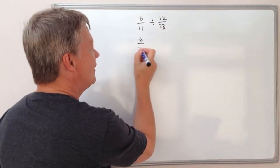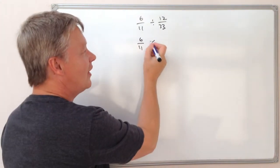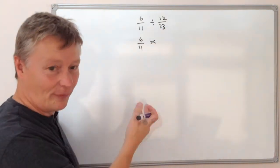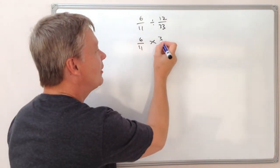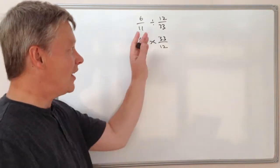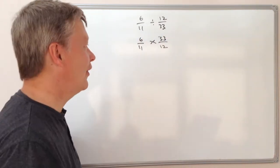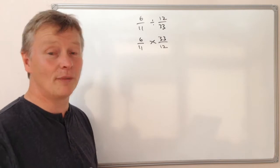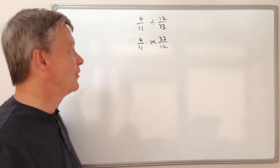So we've got 6 elevenths, so that stays the same, but actually then we multiply and flip this around the other way and it becomes 33 over 12. And that's the trick we always use for dividing fractions. So what I'm going to do now is I'm just going to reduce it and make my numbers a little bit easier to deal with.